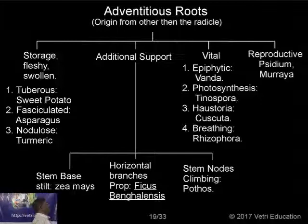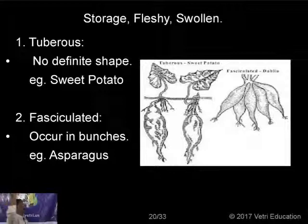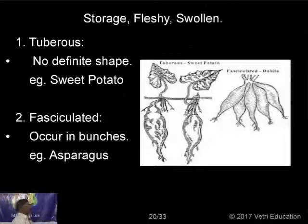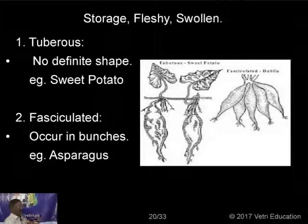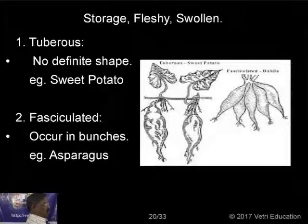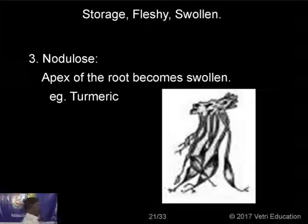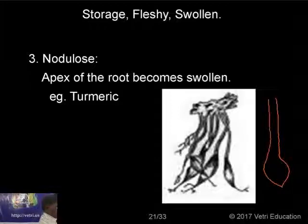The first type of adventitious root modification is storage. Tuberous roots have no definite shape — in sweet potato, adventitious roots develop into tuberous roots with different shapes. The second type is fasciculated, meaning bunchy — a bunch of roots of different shapes develop, as in asparagus. The third type is nodulose — very interesting — found in turmeric and mango ginger. In these adventitious roots, the tip is bulging. Nodulose means nodule-like structures are found at the end of the adventitious roots.